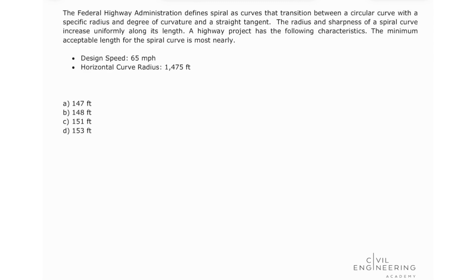The problem states like this. The Federal Highway Administration defines spiral as curves that transition between a circular curve with a specific radius and degree of curvature and a straight tangent. The radius and sharpness of a spiral curve increase uniformly along its length. A highway project has the following characteristics.